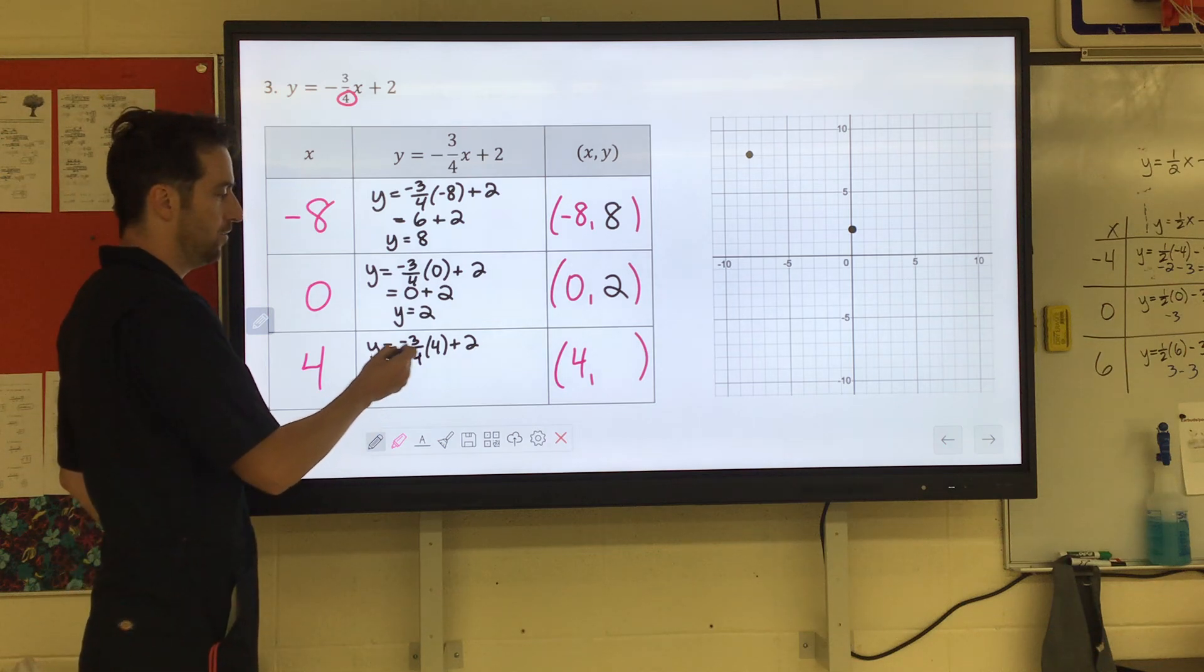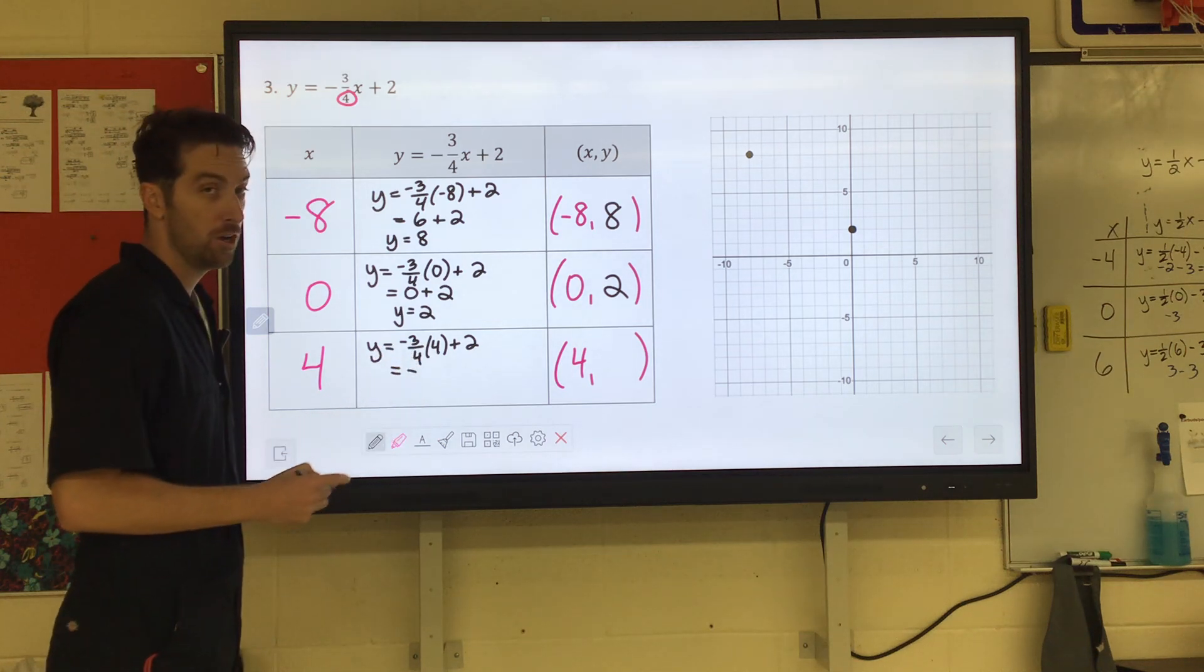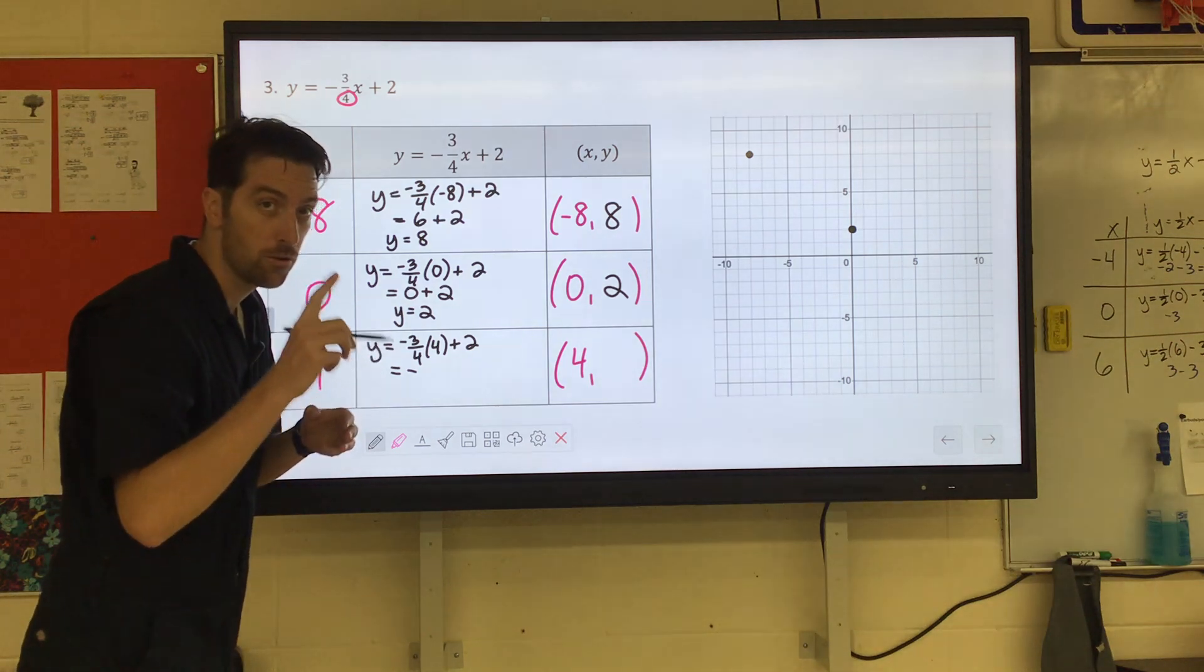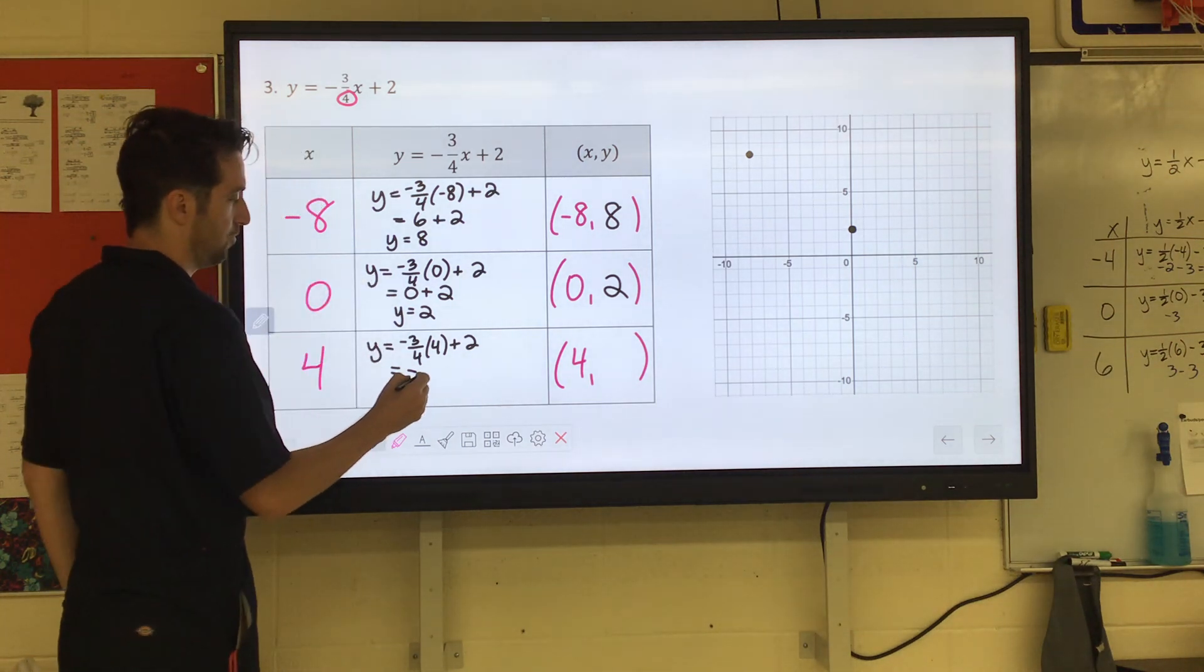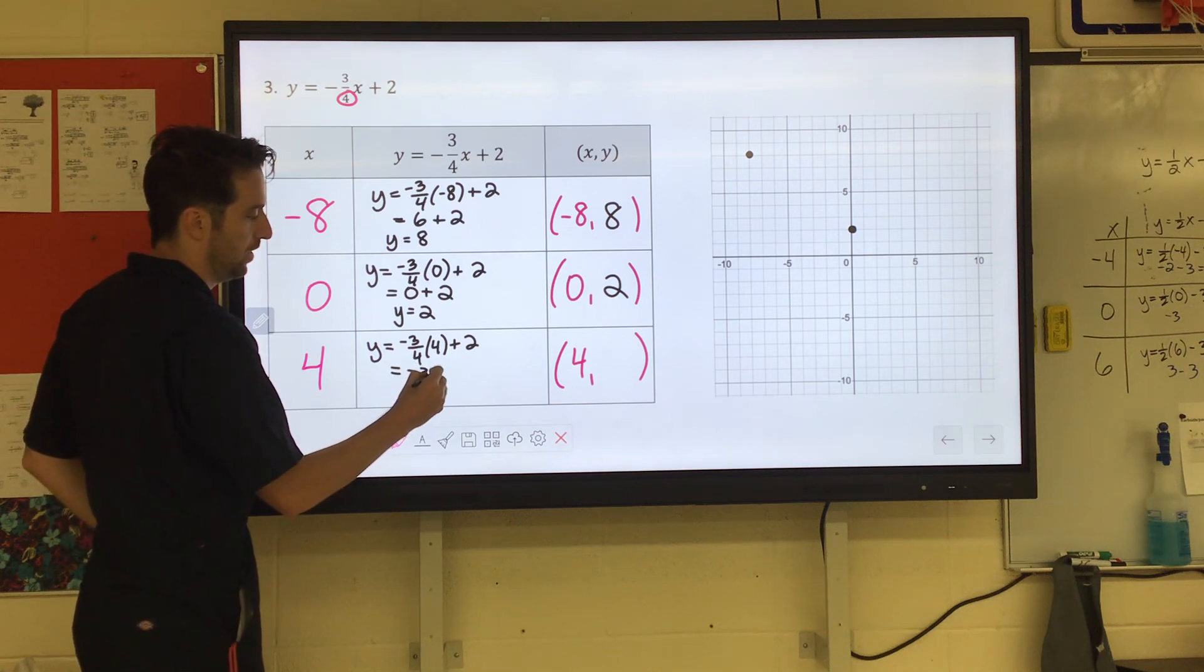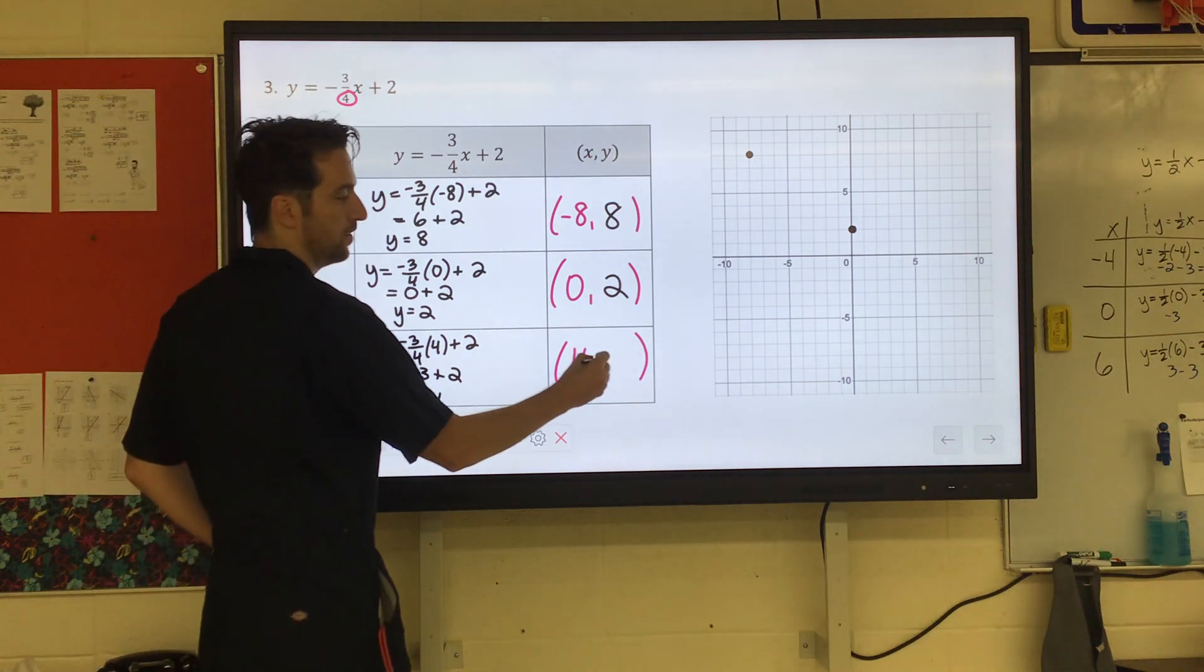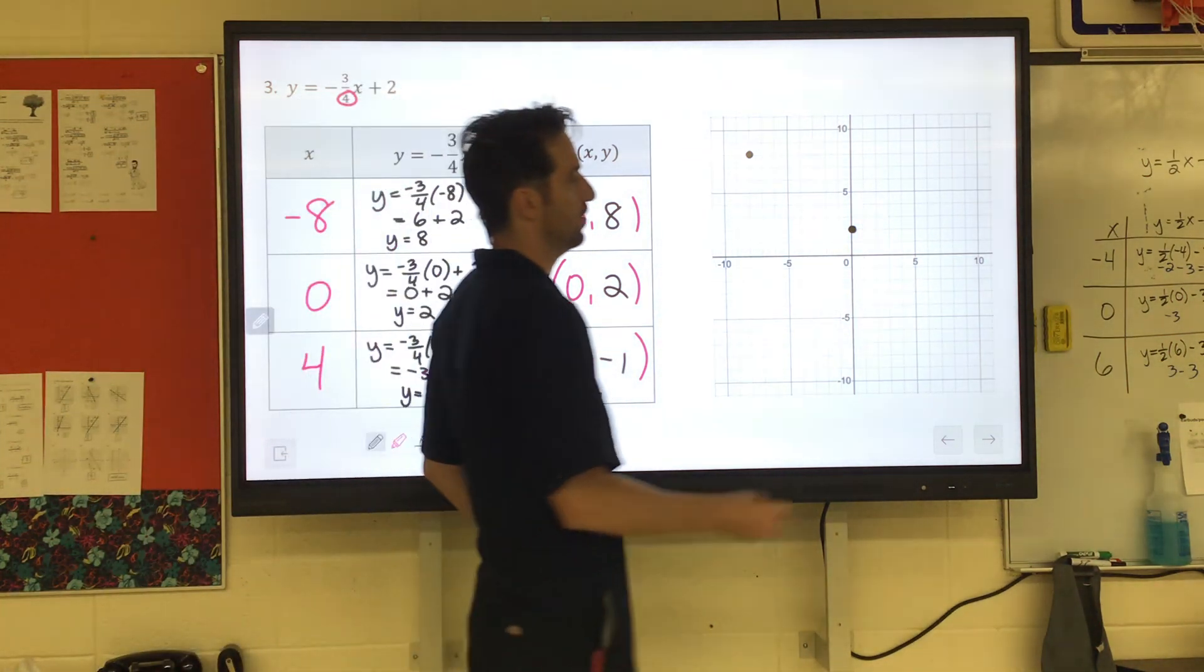And then when we substitute in positive four, let's see what we get. We have a negative times positive, I know that's going to come out negative. One-fourth of four is one, three-fourths of four, one times three would be three. So we have negative three plus two, which is negative one.